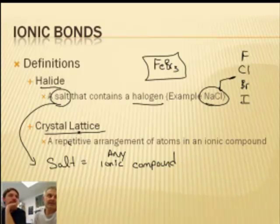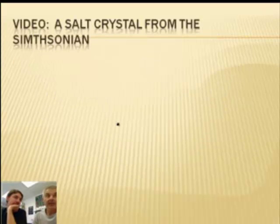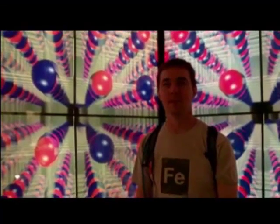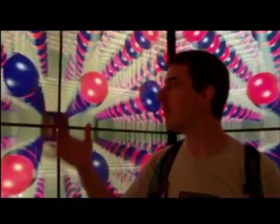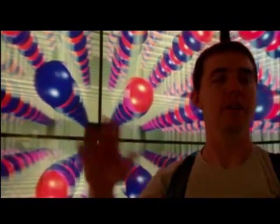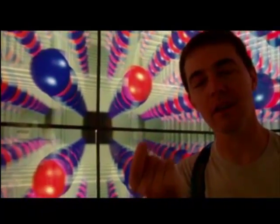Going back to the crystal lattice, let's take a tour to the Smithsonian Institution in Washington, D.C. Inside the sodium chloride crystal, we have alternating positive and negative ions — sodium being the red and chloride being the blue — alternating positive-negative, sodium-chloride, forever and ever until you get to the edge of the crystal. There are billions and billions of these in just one little piece of salt on your french fry.